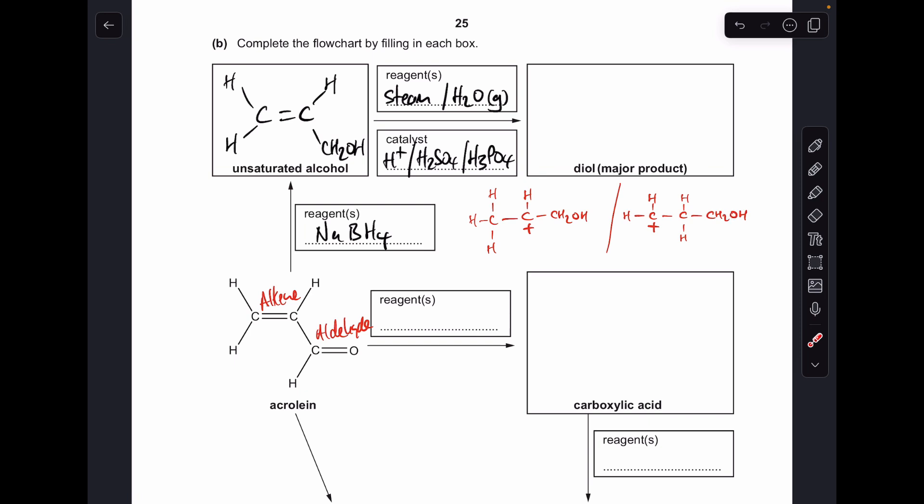So what kind of carbocations have we got? This one here, if we focus on the C+, we've got one, two carbon groups bonded directly to that. So this is a secondary carbocation whereas this one, this carbon is only bonded directly to one other carbon. So this is a primary carbocation. The secondary one is the more stable one so the major product is that one there.